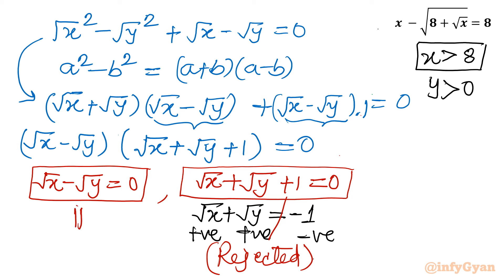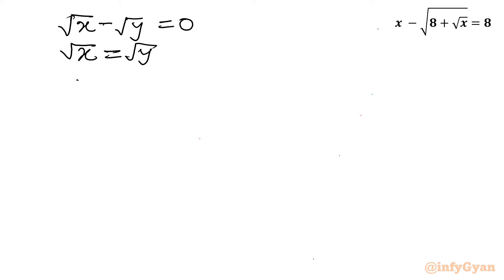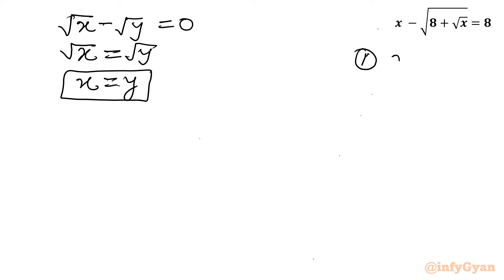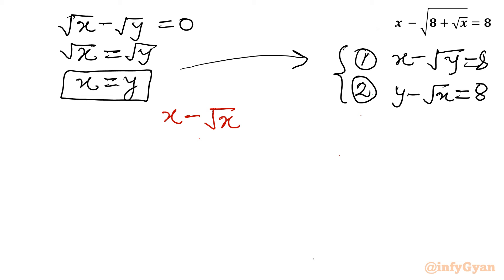Now only one equation is left: square root x minus square root y equals 0. The conclusion is square root x equals square root y. Squaring both sides gives x equals y. Now, recalling equation 1 which was x minus root y equal to 8, and substituting x equal to y, I get x minus root x equal to 8.